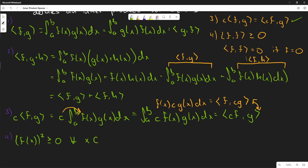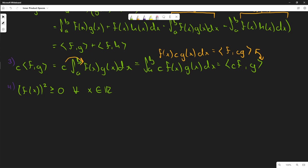What that means is when you take the integral from a to b of f(x) squared dx, that will also be greater than or equal to zero.